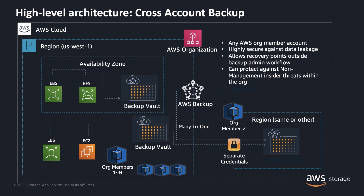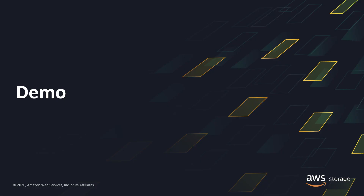We can have one backup vault in the source account copied to one backup vault in the destination region, or you can also have a many-to-one mapping where you can back up multiple vaults from the source account to a single vault or multiple vaults in the destination account. In this demo, you will see how to use Cross-Account backups to protect your data from one account to another across regions and restore it to a source account or a different account.